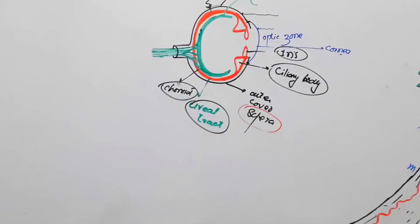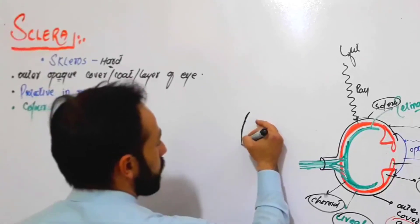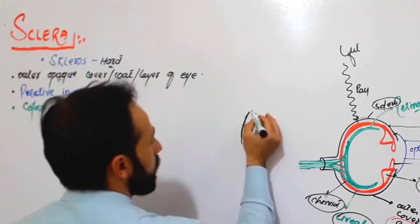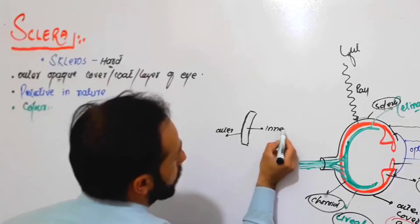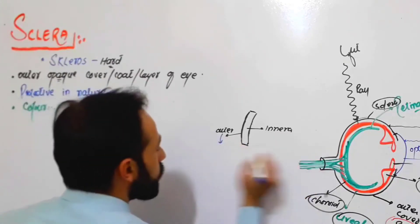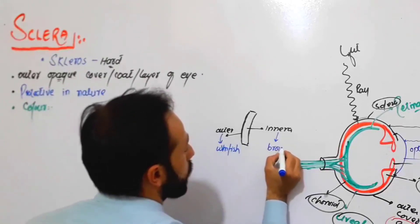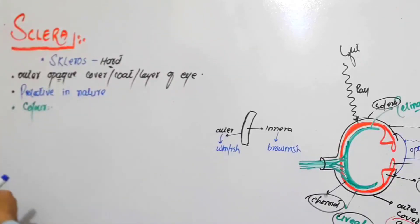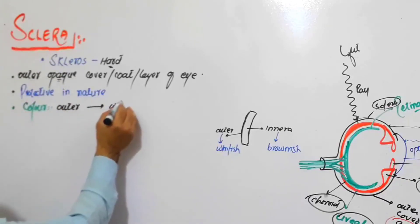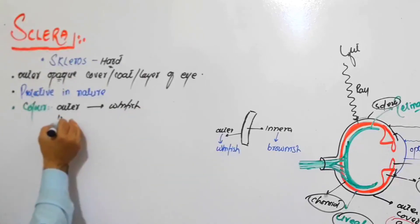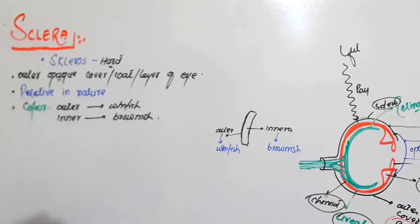Now, what is the color of the sclera? If we draw a small part of the sclera, the outer part of the sclera is whitish in color, while the inner part of the sclera is brownish in color. So the sclera has two colors: the outer surface is whitish and the inner surface is brownish.